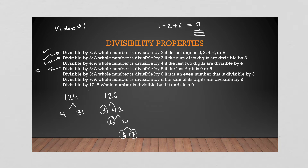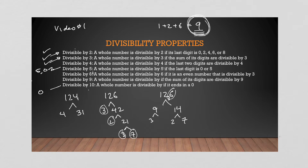That covers two, three, four. Five is easy — if a number ends in a five or zero, you can divide by five. Ten is easy too. Nine uses the same digit-sum rule as three: for 126, one plus two plus six is nine, which is divisible by nine. So nine goes into 12 once with a three remainder, nine goes into 36 four times. Either way you get two threes, a two, and a seven — same prime factors, just different order.